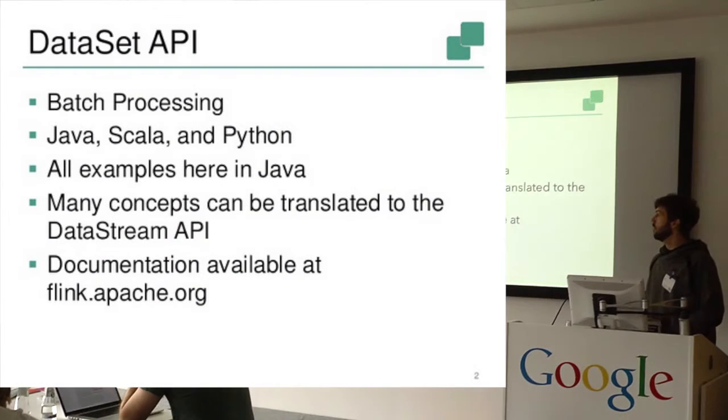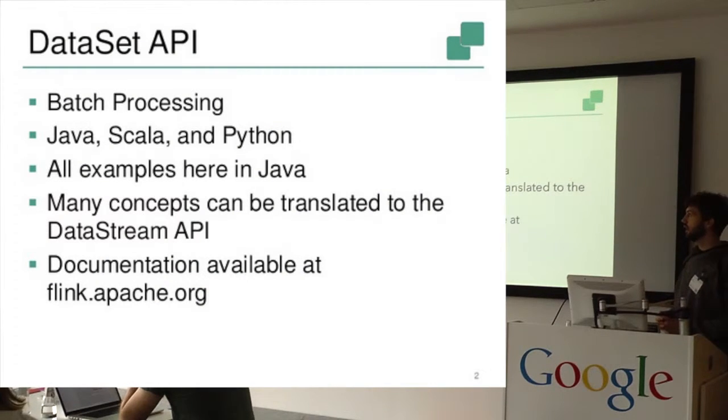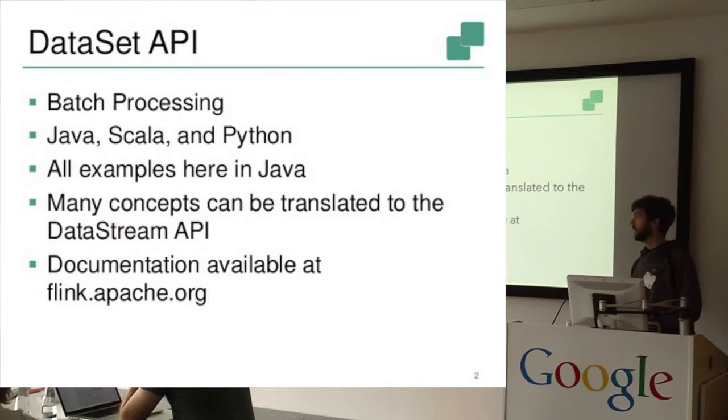As I already mentioned, the Dataset API is the API you would use for batch processing. It's available in Java, Scala, and Python, and today we would just show the examples all for Java. But the APIs are very similar, and if you understand Java examples, you can translate them easily into Scala or Python.